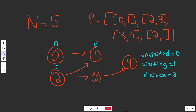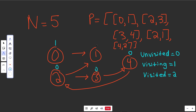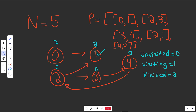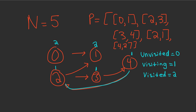Now let's add a cycle: 4 requires 2, meaning 4 points back to 2. We redo the traversal quickly. Nodes 0 and 1 get marked visited. We start visiting node 2, go down to 3 (visiting), then to 4 (visiting). But 4's neighbor is 2, and 2 is still in the visiting state — it's in our current path. That means we've found a cycle. We declare a cycle detected and return false overall.